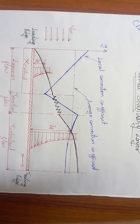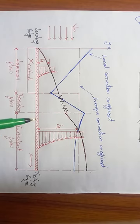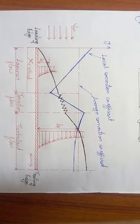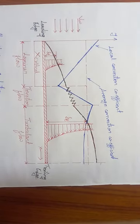Imagine a thin layer of fluid above the plate, stuck to it—like you have applied adhesive and made that layer stick to the surface. Since velocity is zero, the layer is stationary, and we have a conduction mode of heat transfer there.